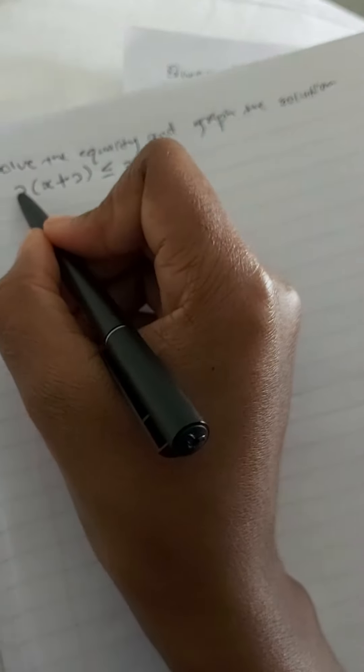Okay, we are trying another example of solving an inequality. They say solve the inequality and graph the solution, so we are given 2 into x plus 2 is less or equal to x minus 5.